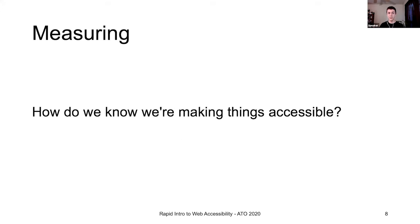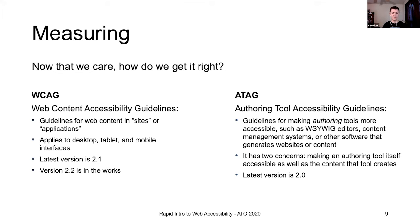So how do we make sure we're making things accessible on the web? There are two sets of guidelines a designer or developer can use to determine how to build a new interface or evaluate an existing one. We'll spend more time on the Web Content Accessibility Guidelines, or WCAG, as these apply to the widest range of web applications and websites. ATAG, the Authoring Tool Accessibility Guidelines, applies to applications that build web content, such as content management systems, HTML editors, or other tools.